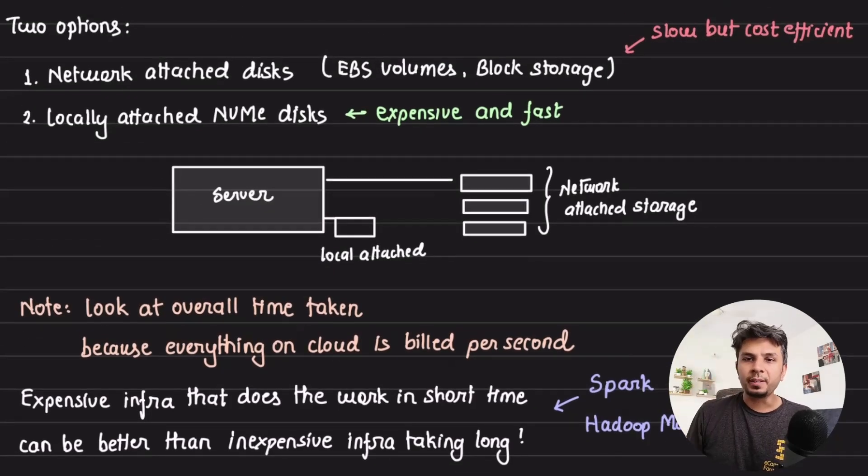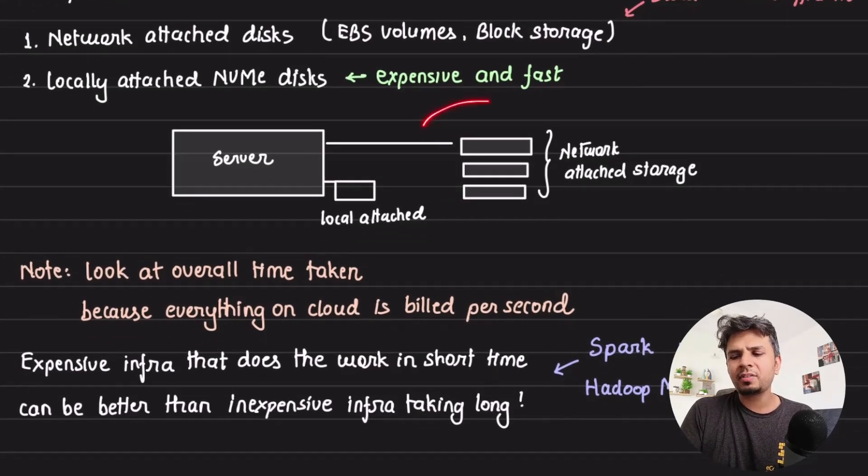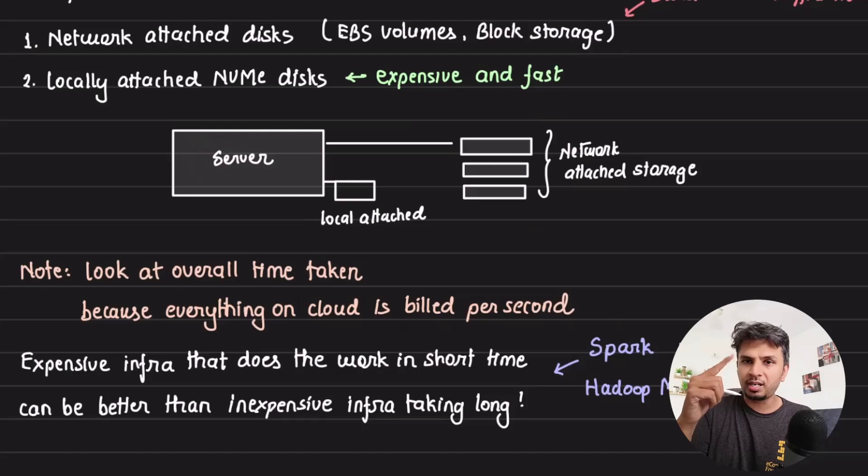But if you also observe carefully for a regular CI/CD job, do you really need network attached storage? Because what is the key advantage of using network attached storage like an EBS volume? The key advantage is if this machine goes down, I'm able to attach this hard disk to some other machine. That's why it's easy. Like you could recover from it well.